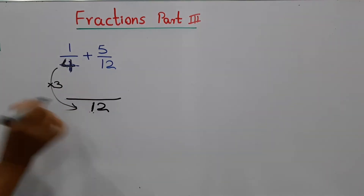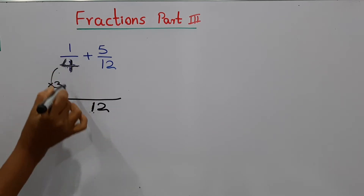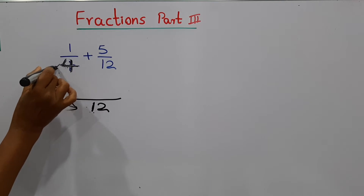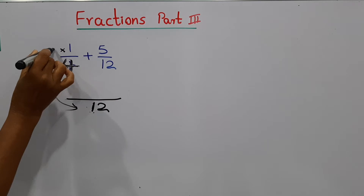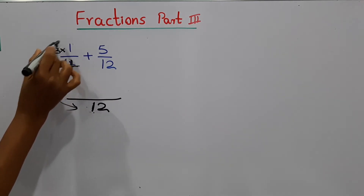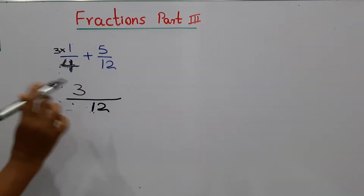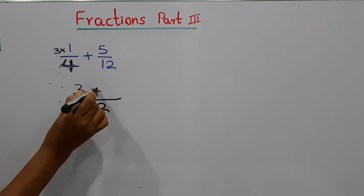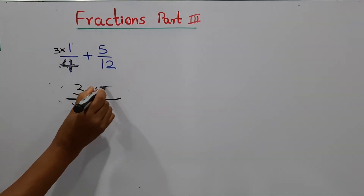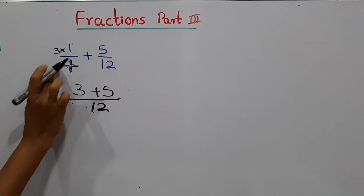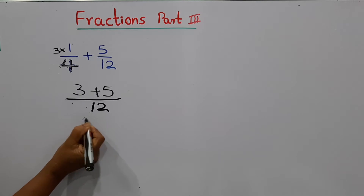We multiply number 4 by 3 and it becomes 12. If we multiply the denominator by 3, we have to multiply the numerator also by 3. That means 3 times 1 is 3. Then we add — the second fraction's denominator is already 12, so no need to multiply. We just write 5 as the numerator.